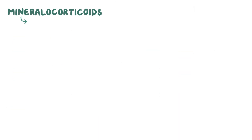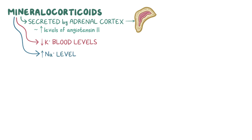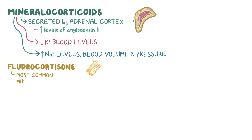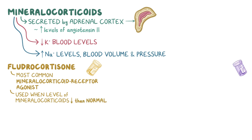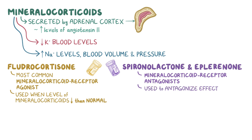As a quick recap: mineralocorticoids are normally secreted by the adrenal cortex in response to elevated levels of angiotensin 2. They decrease potassium blood levels but increase sodium levels along with blood volume and blood pressure. Fludrocortisone, the most commonly used mineralocorticoid receptor agonist, is used in conditions where mineralocorticoid levels are lower than normal. Mineralocorticoid receptor antagonists such as spironolactone and eplerenone are used in conditions where we want to antagonize the effects of aldosterone, like hypertension and edema.